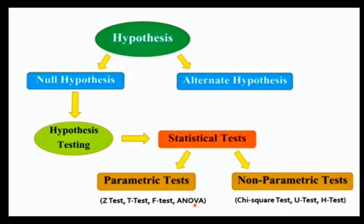Basically, ANOVA is a statistical test, which is a parametric test. To study ANOVA, one must define a null hypothesis. We use the null hypothesis to study this method — this method involves the null hypothesis.